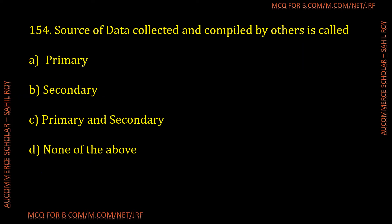The sources of data collected and compiled by others is called what? The options are: Option 1 primary source, Option 2 secondary source, Option 3 primary and secondary source, and Option 4 none of the above. The correct answer is secondary source — Option B is the correct answer for the given question.